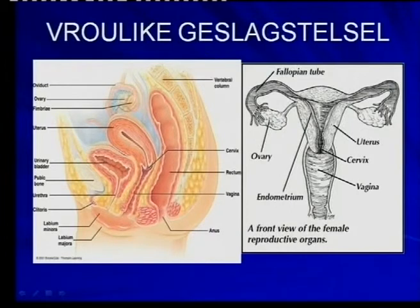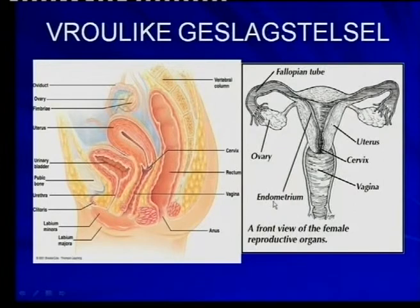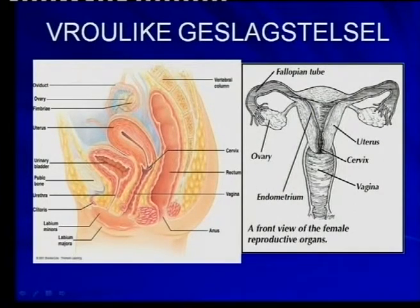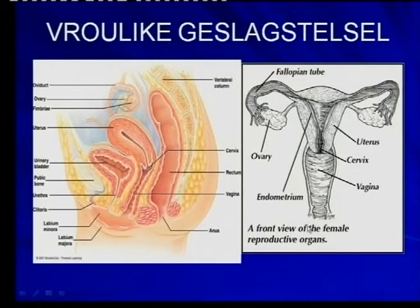The ovary, fallopian tube, the uterus itself. The endometrium is the lining of the uterus. The cervix — the neck there — the vagina, and the outside part, the vulva.